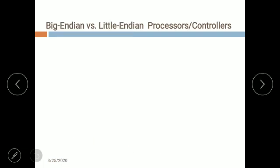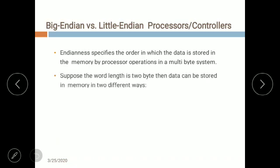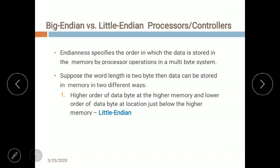An important concept in any microprocessor, controller, or computer organization topic is the clear difference between big endian and little endian. Endianness specifies the order in which data is stored in memory by processor operations in a multi-byte system. If the word length is two bytes, the data can be stored in memory in two different ways. If the higher-order data byte is at the higher memory address and the lower-order byte is at the lower address, it is called little endian.